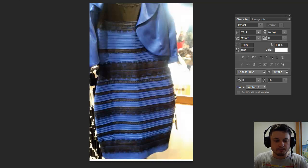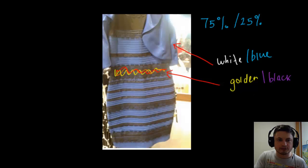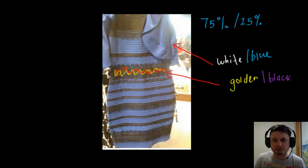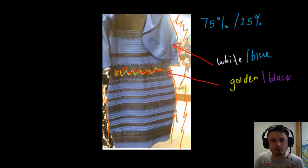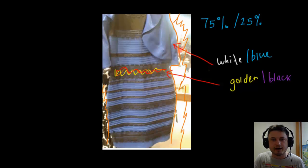Now why is it that certain people saw this very differently from other people, and basically the majority saw this as gold and white in the beginning? Let's actually try to analyze this scientifically and use psychology and neuroscience to see what's happening here. Before I start though, this part right here is oversaturated — really, really bright — and because of this our brain starts receiving this image in a very different fashion.